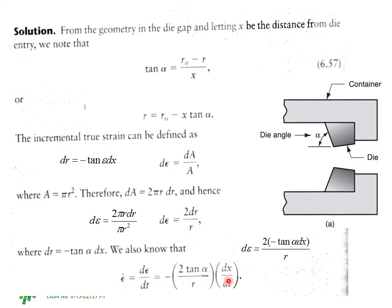Let me quickly recap this for you. This is the diagram given. You draw a center line; from the center line until here is R₀. This is the die angle alpha. This is the beginning of the die, so if you draw a vertical line from here, then this is the vertical line. Here you are measuring X, so if you take any point here, the distance is X, the radius is R, and the final radius is R₀.